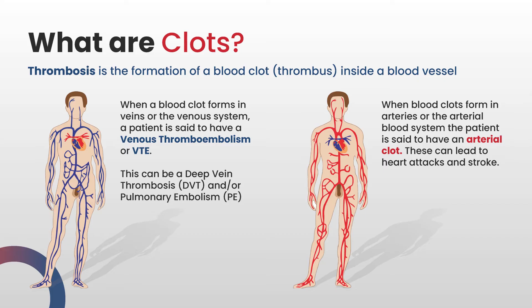The three abbreviations that you often hear are VTE for venous thromboembolism, DVT for deep vein thrombosis, and PE for pulmonary embolism. When blood clots form in the arteries or the arterial blood system, the patient is said to have had an arterial clot, and these can lead to heart attacks and stroke. In this presentation, we're going to focus on VTE, or venous thromboembolism — so clots in the venous system.